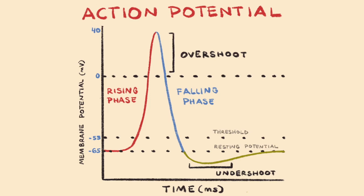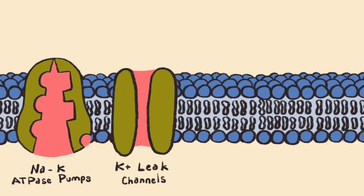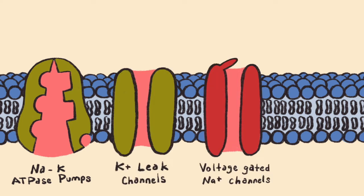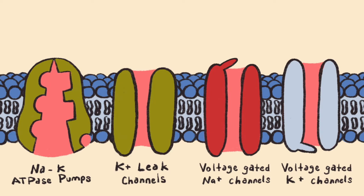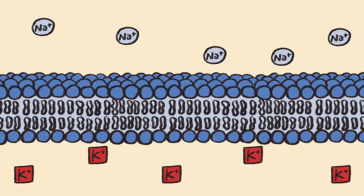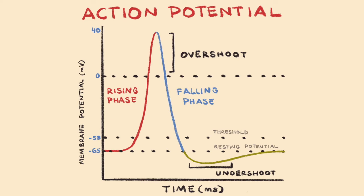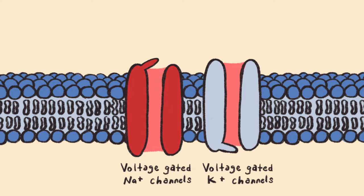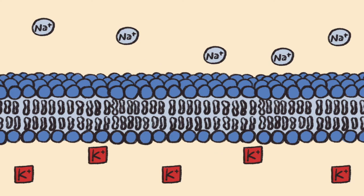Throughout the action potential phases, the focus is on what is occurring with the sodium-potassium ATPase pumps, potassium leak channels, voltage-gated sodium channels, and voltage-gated potassium channels. All of this revolves around where ions are moving, where there are more sodium versus potassium ions, and what is the charge inside the neuron. We will now take a closer look at the rising and falling phases, focusing on the ion channels that are open and closed, where ions are moving, where ions are more concentrated, and what is happening to the charge environment of the neuron.